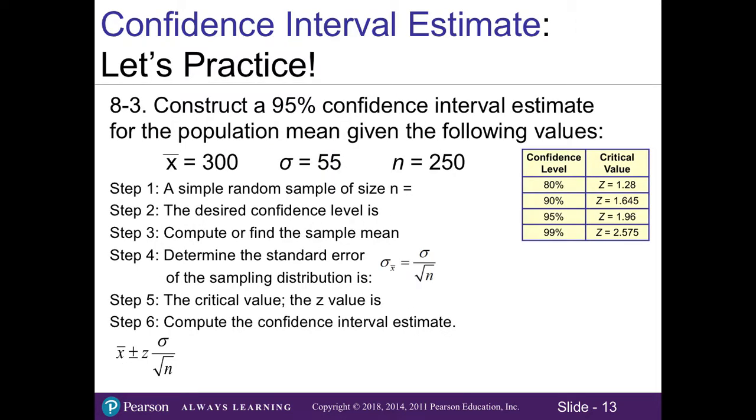Let's practice using problem three from the chapter. Here you're going to construct a 95% confidence interval estimate for the population mean given the following values. Notice there's no story here, we're just working through the formula. We have our sample mean of 300, a population standard deviation of 55, and a sample size n of 250. Step one, identify our n. Step two, what's our confidence level? 95%.